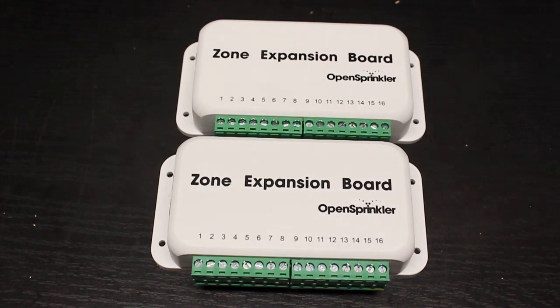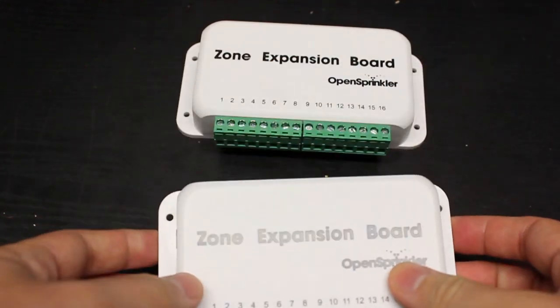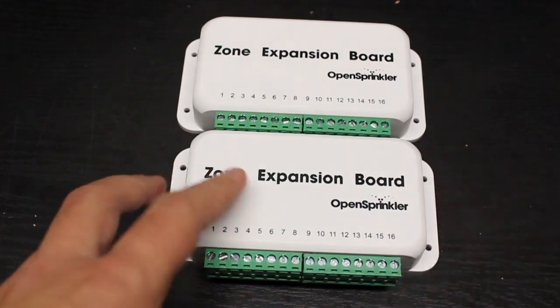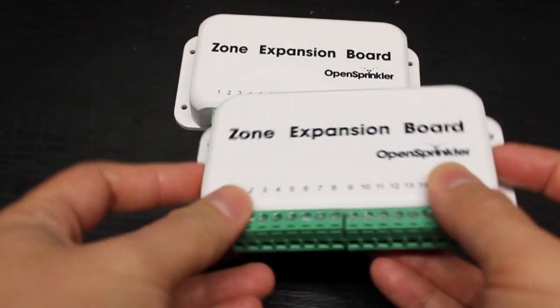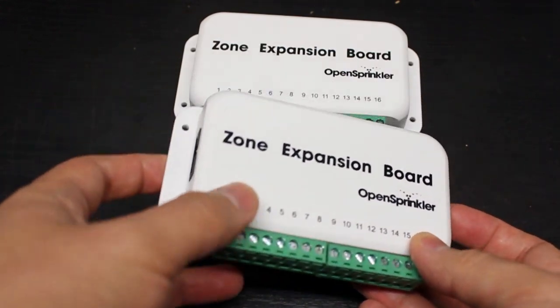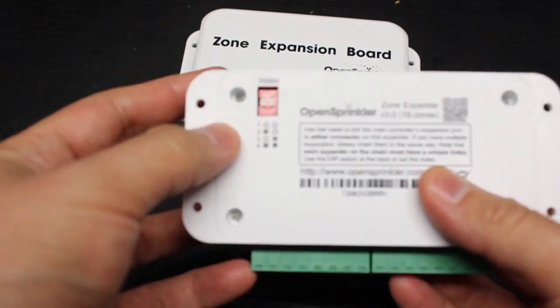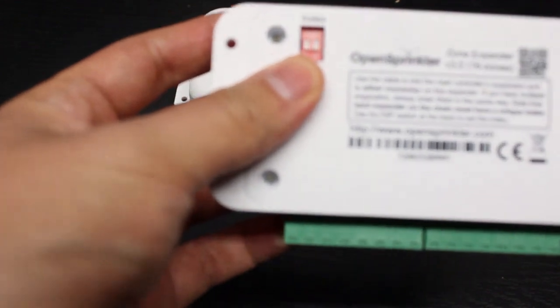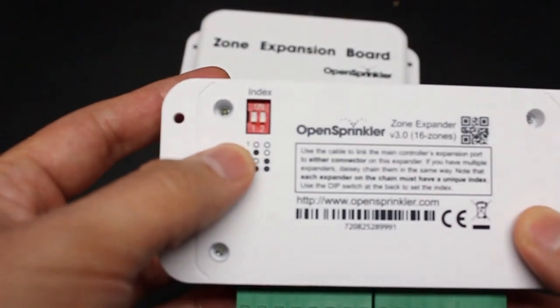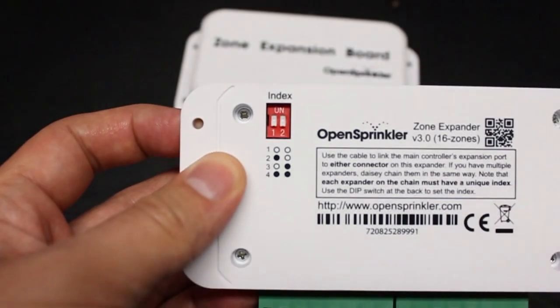OpenSprinkler V3 uses what's called I2C or two-wire microchip to implement the expanders. The benefit of this is that it allows you to chain these expanders in any way you want. So these two ports on the expanders are totally symmetric. On the other hand, each expander must have a unique index. And you can set this index by using this dip switch at the back of the expander. Each expander must have a unique index for the main controller to tell them apart.